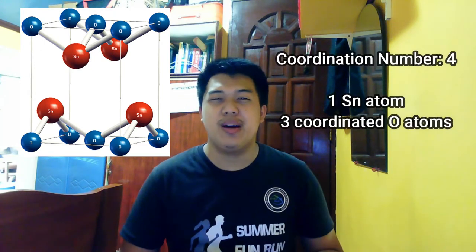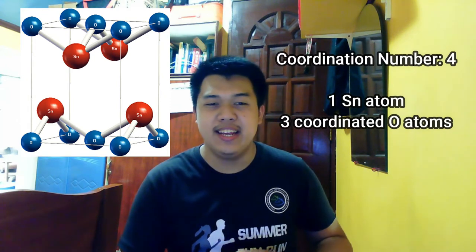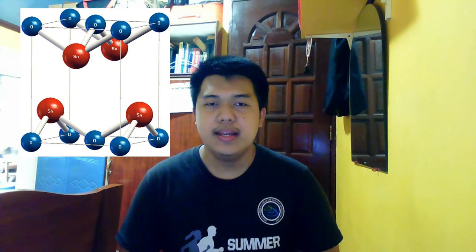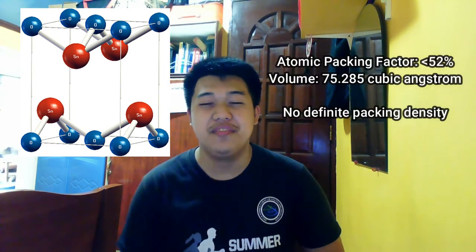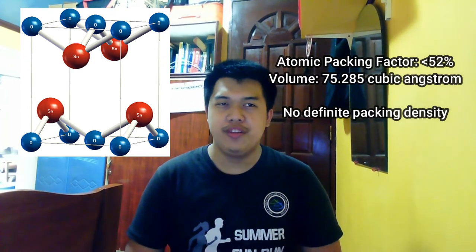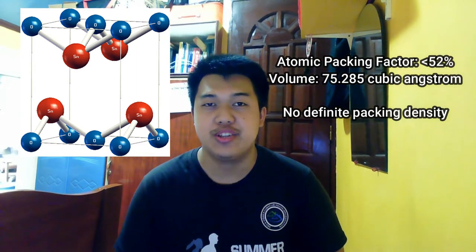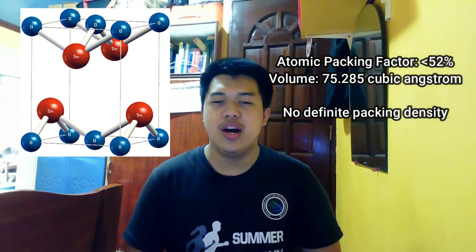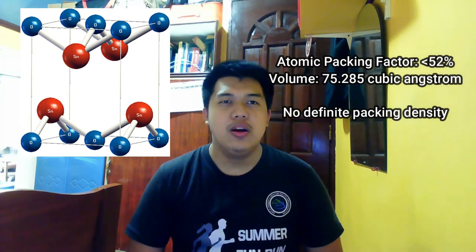Tin 2 oxide has a coordination number of four — one Sn atom, or tin, and three coordinated oxygen atoms. Tin 2 oxide has an atomic packing factor of less than 52 percent and has a volume of 75.285 cubic angstroms. Unfortunately for this compound, as well as other basic tetragonal crystals, they do not have a packing structure nor a packing density. Although basic tetragonal structures do classify as a hexagonal close-packed structure in special cases, for this case tin 2 oxide does not classify as one of those — perhaps because it is loosely packed.